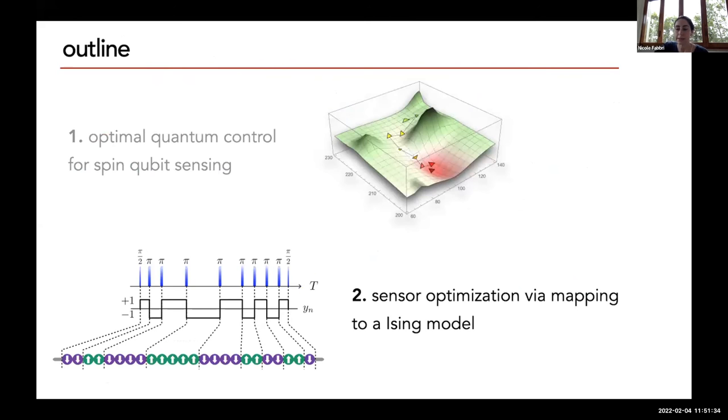These methods have shown good improvement compared to standard methods, but computational complexity may limit the applicability of the method. In the second part of the talk I will show you another method, a new method that draws from an analogy between pulsed dynamical control of single spin qubit sensors and Ising spin glass models.